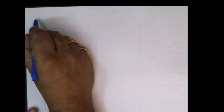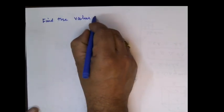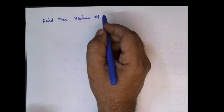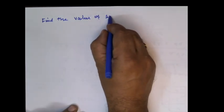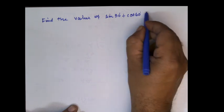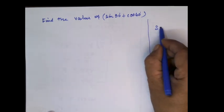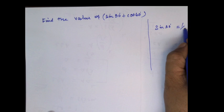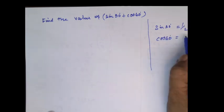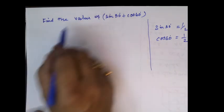Find the value of sine 30 degree plus cos 60 degree. What is the value of sine 30 degree? 1 by 2. Cos 60 degree is also 1 by 2. So we can substitute these values.